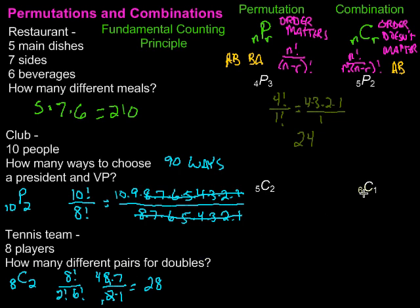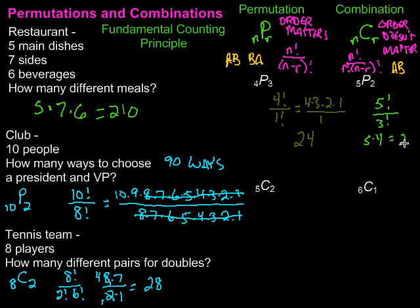For 5P2, using the permutation formula: 5 factorial over 5 minus 2, which is 3 factorial. The 3, 2, 1 cancel out on both top and bottom, leaving just 5 times 4 on top, which gives us 20.